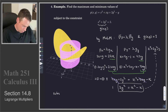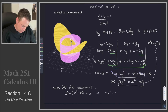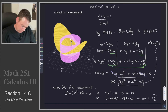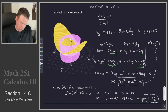We substitute this equation — call it star — into the constraint. We get x squared plus 2y squared, replacing 2y squared with x squared minus x, giving x squared plus x squared minus x equals 3, or 2x squared minus x minus 3 equals 0. This factors nicely as (x plus 1)(2x minus 3) equals 0, so x equals negative 1 or x equals 3 halves.